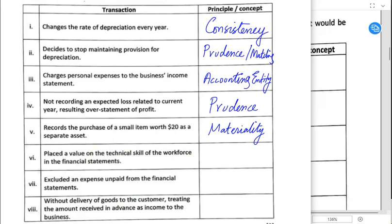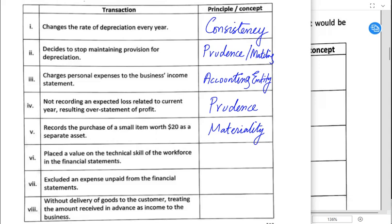Placing a value on the technical skill of the workforce: even if staff are improving their technical knowledge and skills day by day, we still cannot record that in the financial statements. We cannot measure those skills, and additionally, staff are not owned by the business — they can leave whenever they want. Therefore, staff knowledge cannot be recorded in financial statements. This is the money measurement concept: in accounts, we should only record things that can be measured in money terms.